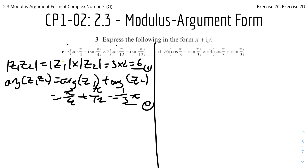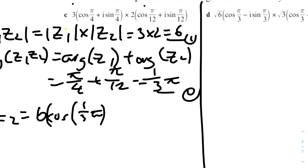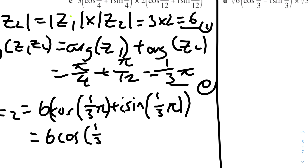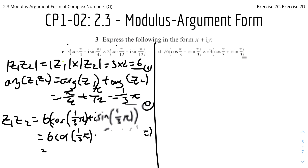We can now assemble: z₁z₂ = 6(cos(π/3) + i sin(π/3)). Expanding: 6 cos(π/3) + 6i sin(π/3). Evaluating: 6 cos(π/3) = 3, and 6 sin(π/3) = 3√3. Therefore z₁z₂ = 3 + 3√3 i.